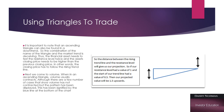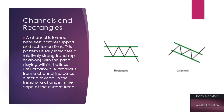Next we come to volume. When in an ascending triangle, volume usually contracts. We're always looking as assets move into the center of the triangle — the apex — for that volume to contract. It's called the calm before the storm.